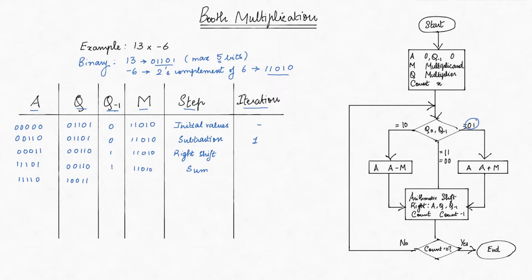Keep in mind we preserve the most significant bit, or MSB, of register A, so we keep it as 1 while shifting. The same practice applies when the MSB of A is 0.